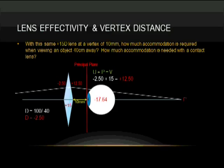Now that we have an object forty centimeters away, that means its vergence will be minus 2.50 when it hits this lens. After passing through a plus fifteen lens, there will be plus 12.50 of vergence as it passes through the lens.